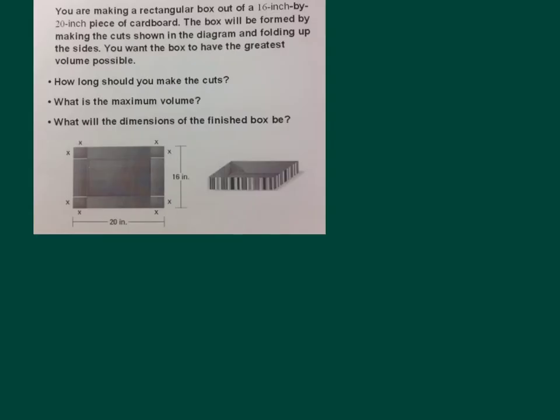This is a really appropriate word problem to see how the maxes and zeros of polynomial functions will help. So I'm making a rectangular box out of 16x20 inch piece of cardboard. And the box will be formed by making cuts, like you can see in the picture. I want to have the biggest volume I can possibly get. How long should I make the cuts? What's the maximum volume and what will the dimensions? So obviously I need to know what volume of a prism is. So volume of a prism is length times width times height.